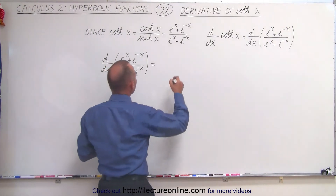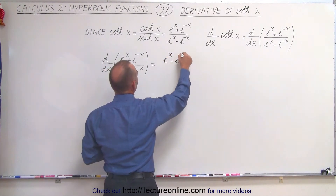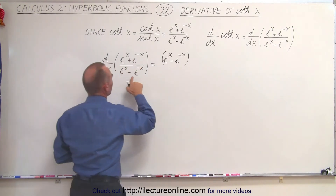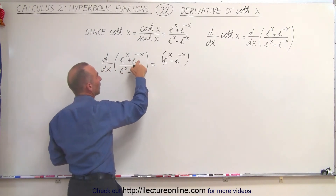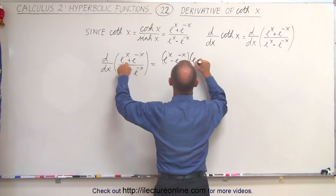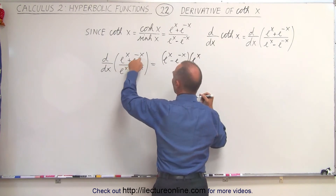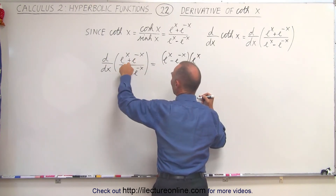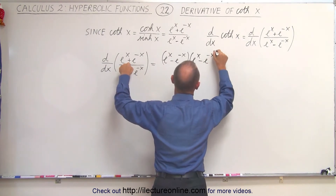We'll take the denominator, e to the x minus e to the minus x, and multiply that times the derivative of the numerator, which is equal to e to the x. When we take the derivative of e to the minus x, we get a minus sign, which turns this into minus e to the minus x.